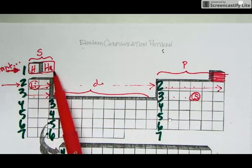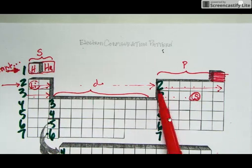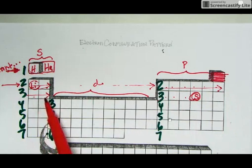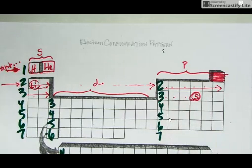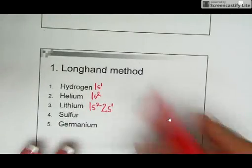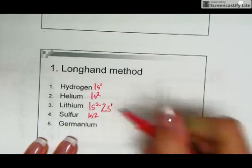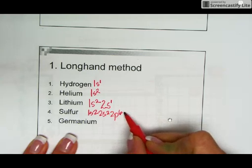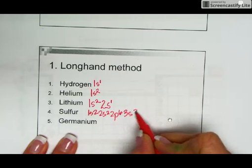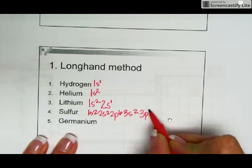So let me review. We said 1s2, 2s2, 2p6, 3s2, and 3p 1, 2, 3, 4. That would be the answer, 3p4. 1s2, 2s2, 2p6, and we said 3s2, 3p4.